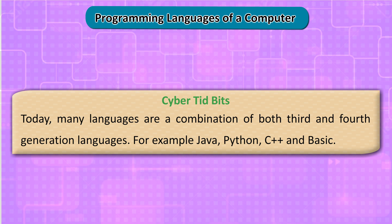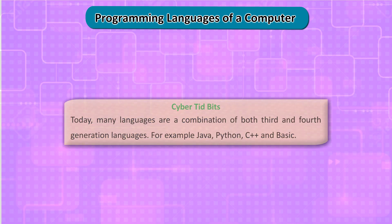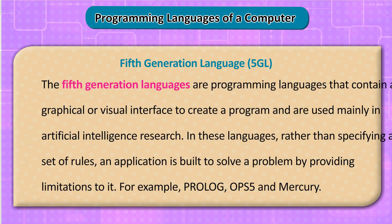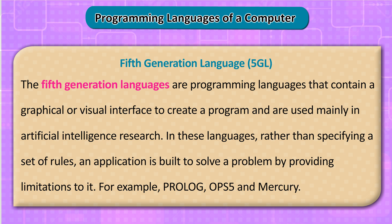Today, many languages are a combination of both third- and fourth-generation languages — for example, Java, Python, C++, and Basic. Fifth-generation languages (5GL) contain a graphical or visual interface to create a program and are used mainly in artificial intelligence research. In these languages, rather than specifying a set of rules, an application is built to solve a problem by providing constraints to it. Examples include Prolog, OPS5, and Mercury.